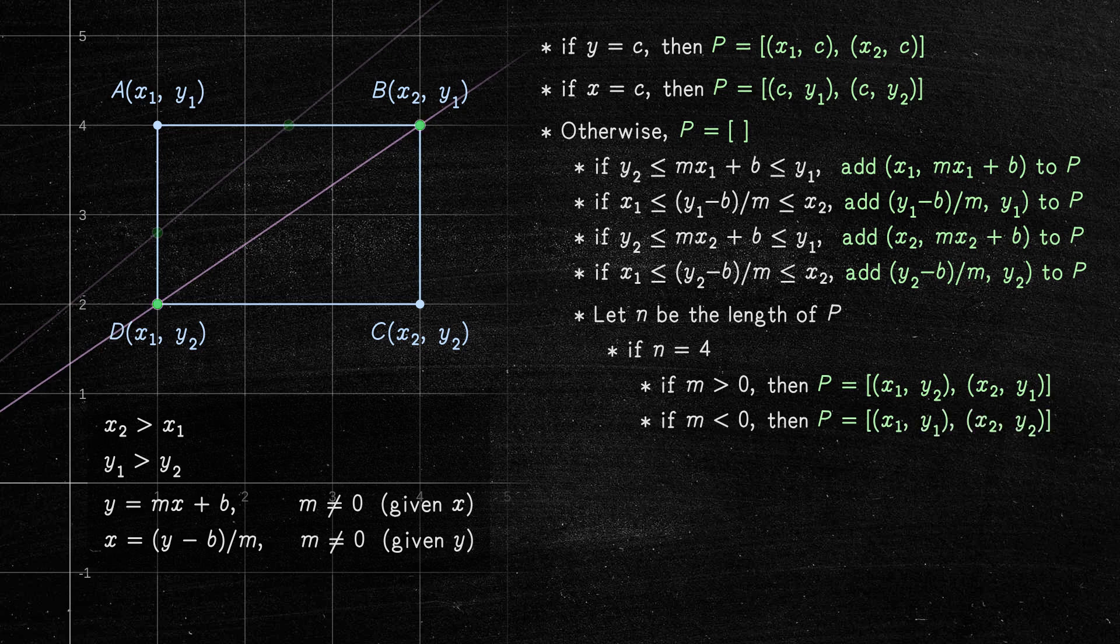If n equals 3, then the line intersected only one corner of the rectangle, so two of the three points in P are the same. We can find the two distinct points in P as follows.